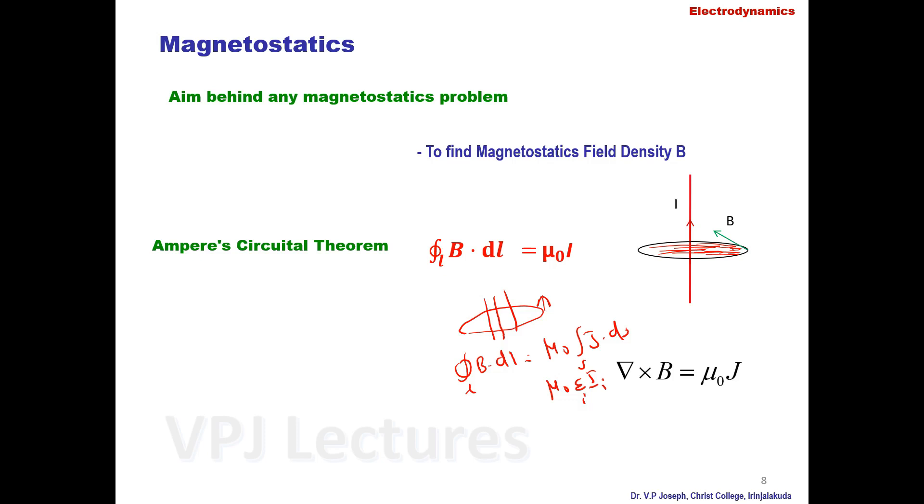The integral form of Ampere's circuital theorem can also be represented in point form as del cross B equals mu_0 J. In electrostatics we observed that del cross E equals zero — the curl of E is zero. But in magnetostatics the curl of B is not zero; instead, del cross B equals mu_0 times the enclosed current J.